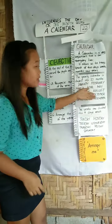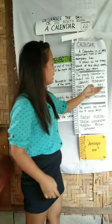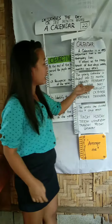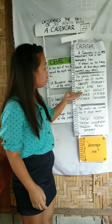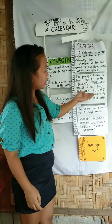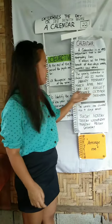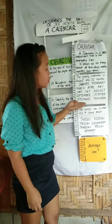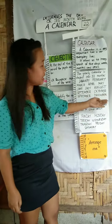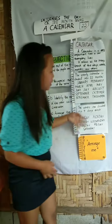The twelve months are: January, February, March, April, May, June, July, August, September, October, November, and December.